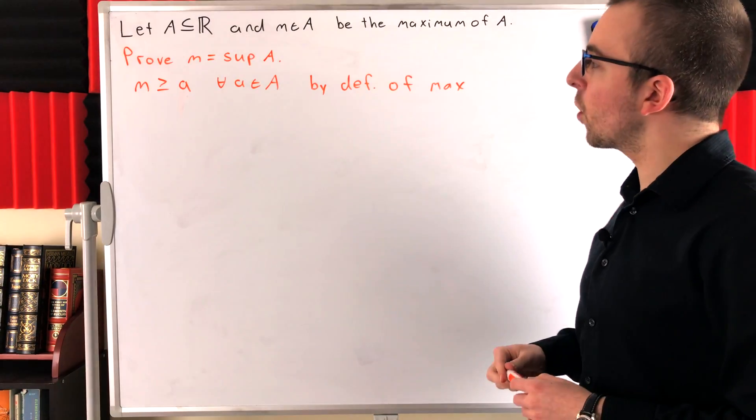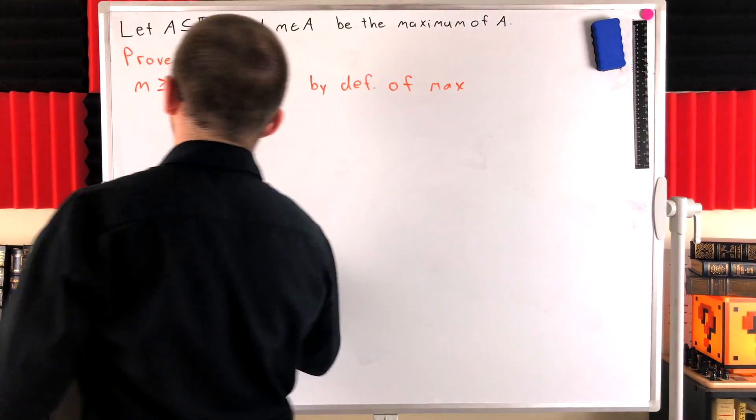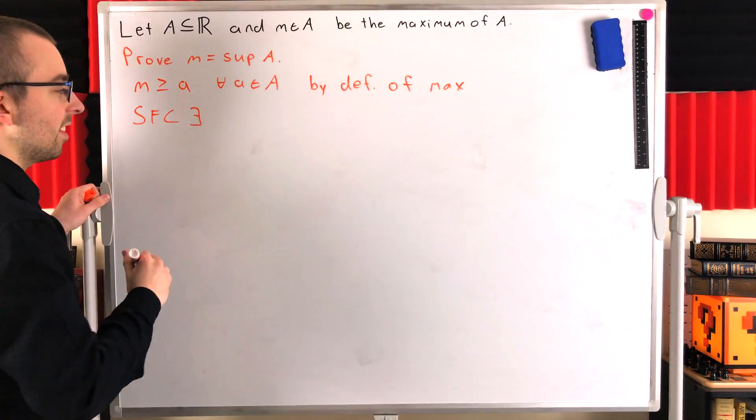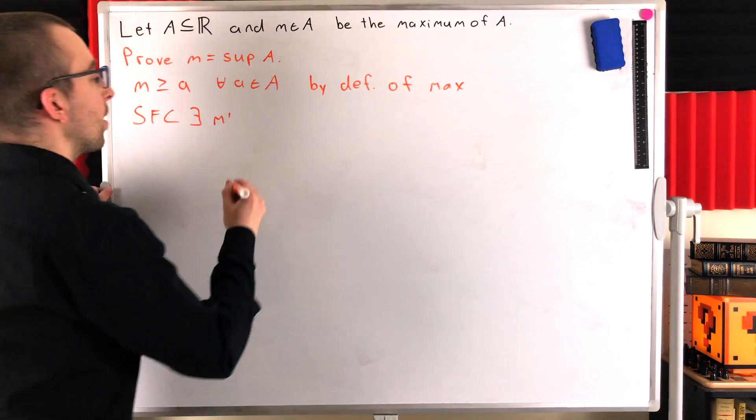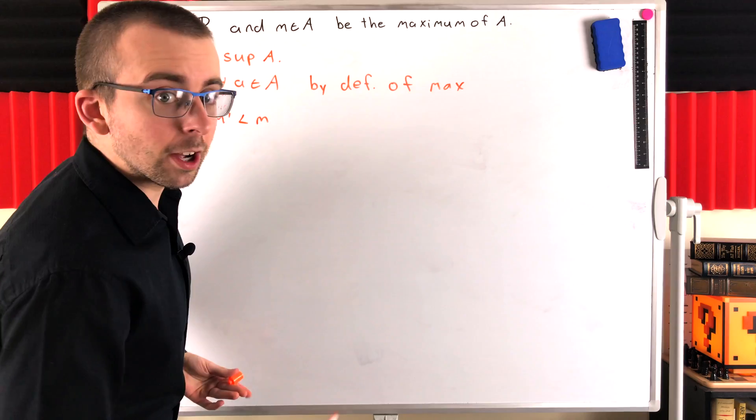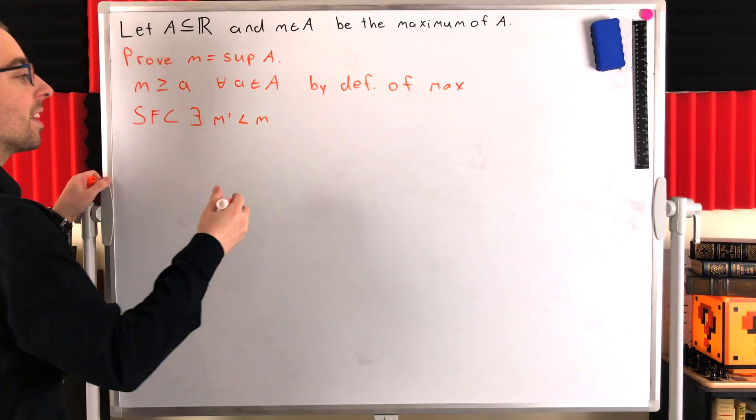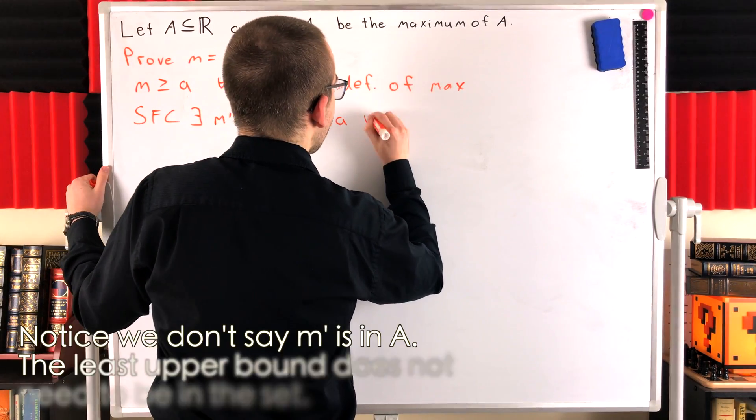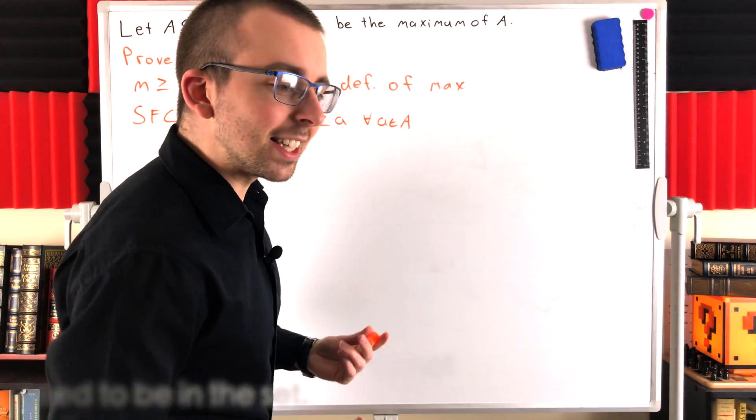Okay, then we just need to show that any other upper bound can't possibly be less than M. So let's use a contradiction argument for that. Suppose for contradiction there exists some other number that we'll call M prime. Suppose for contradiction that there exists M prime that's less than M, because we want to show that M is the least upper bound. So suppose for contradiction there exists M prime that's less than M such that M prime is greater than or equal to little a for every little a in the set big A. This immediately produces a contradiction.